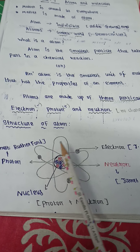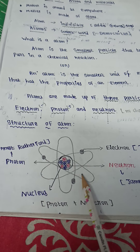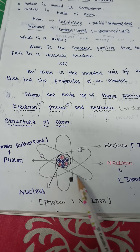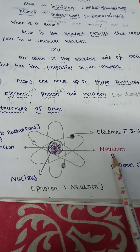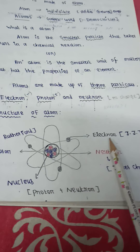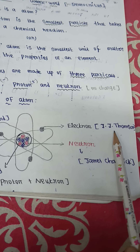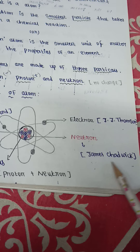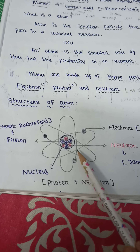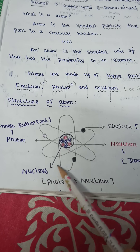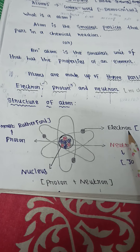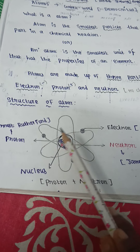This is the structure of an atom. In the middle, protons and neutrons are present. In the outer orbital, electrons are present. Neutron is shown in red color, blue is proton, and black is electron. The electron was discovered by J.J. Thompson, neutron by James Chadwick, and proton by Ernest Rutherford. The nucleus is protons plus neutrons, and the electron is in the outer orbital.